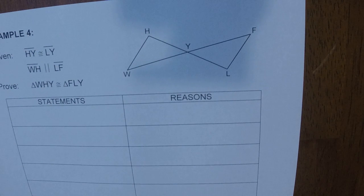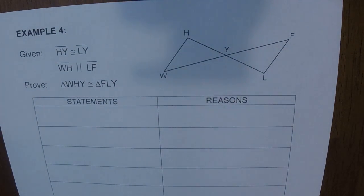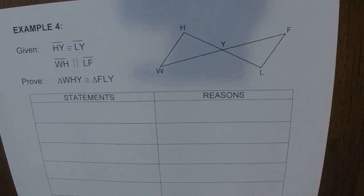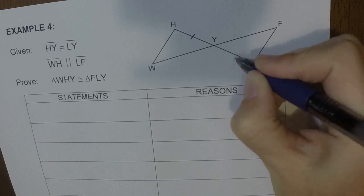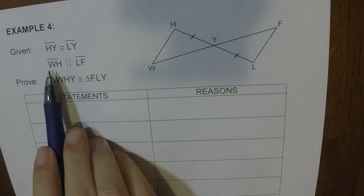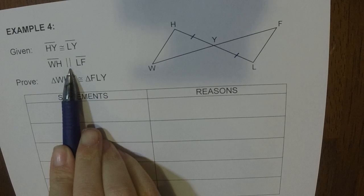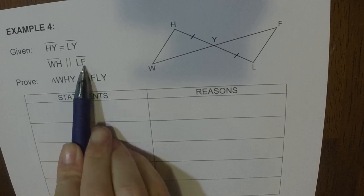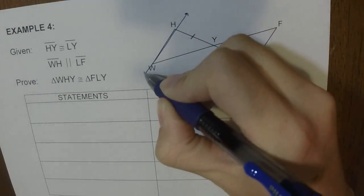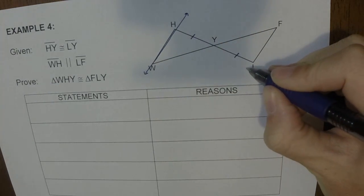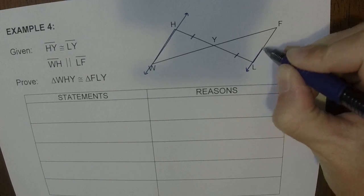So let's go ahead and move on because they are going to get a little bit more difficult to example 4. So again, I'm going to start going a little faster, but it says HY is congruent to LY, so I would need to mark this congruent to this. This says WH is parallel to LF, so this line right here is parallel to this line right here.